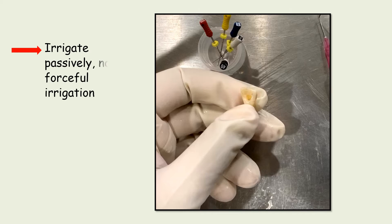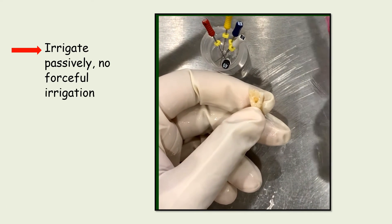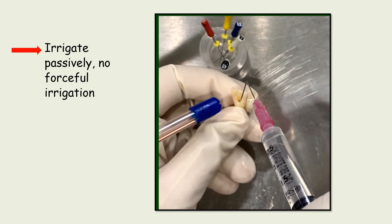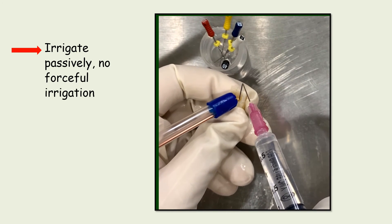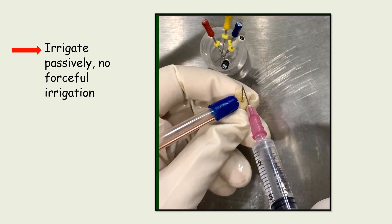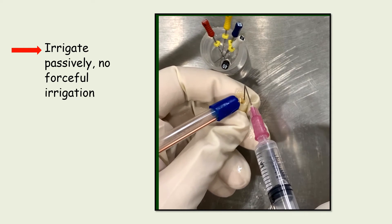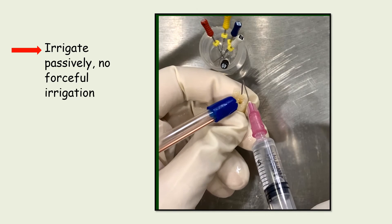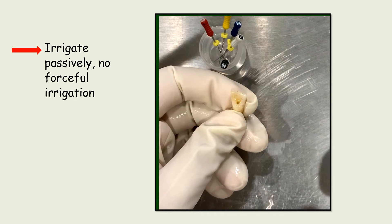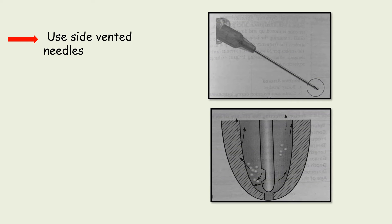The next step is to irrigate passively — no forceful irrigation is required. For this, take a syringe, do not insert it in the canal, keep it at the orifice and move it in an up-and-down motion while irrigating. This way we can ensure we do not extrude the debris beyond the apex. Preferably, use side-vented needles for irrigation. These needles have their ends closed and the opening is on the side, so your solution does not go beyond the apex.